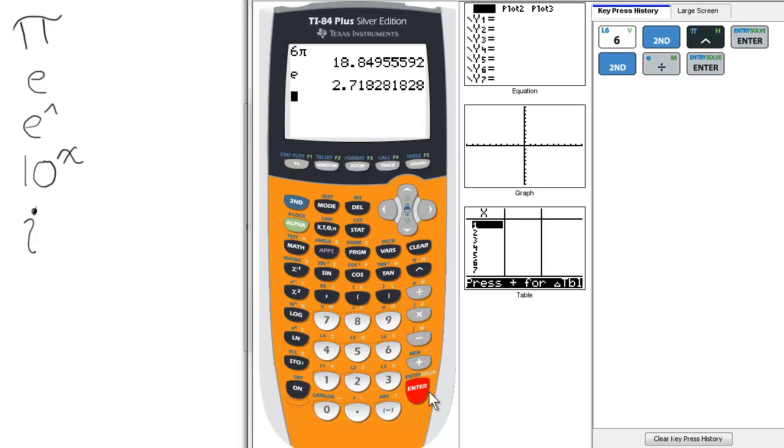Now often times, with natural logs, we'll have to raise e to a certain power. So let's press 2nd and the ln key, which gives us the e raised to the function, and let's raise it to the 6th, enter, and there we have the decimal equivalent of e to the 6th.